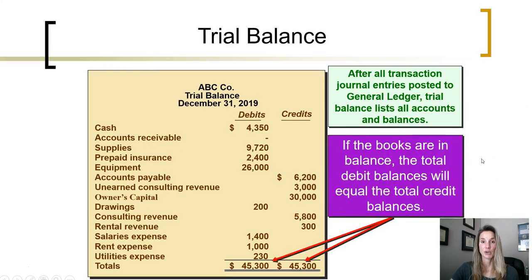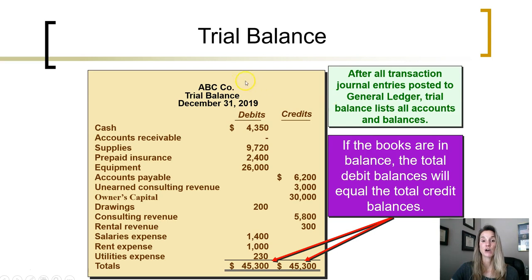This process is done throughout the accounting period as transactions occur. Every time a transaction occurs, an entry is created in the general journal. Each debit and credit from that journal entry is then posted to the general ledger to cause account balances to change. After all journal entries have been posted to the general ledger, we want to make sure the general ledger balances are in balance. We prepare what's called a trial balance — think of it as an informal spreadsheet that lists all of the account balances from the general ledger.